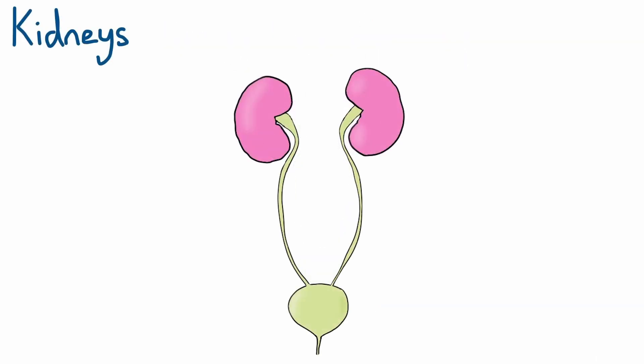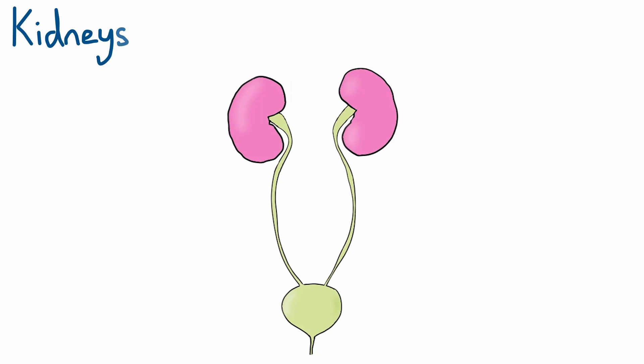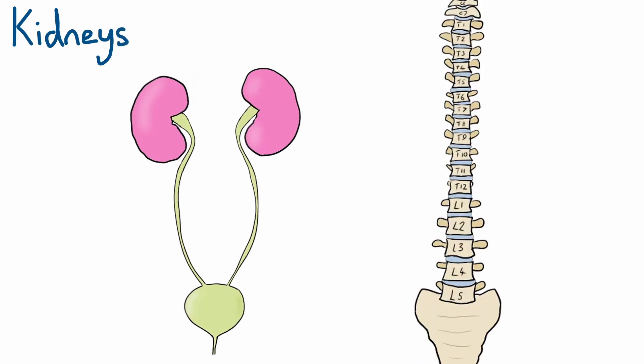The kidneys can be found bilaterally in the abdominal cavity. They sit in the retroperitoneal space, i.e. they are not within the peritoneum, which is a thin lining that coats most intra-abdominal organs. They can be found at the vertebral level T12 to L3, with the right kidney sitting slightly lower due to the liver. They're around 12cm in length, or around 3 vertebrae. Each kidney also has an adrenal gland sitting on its superior pole.